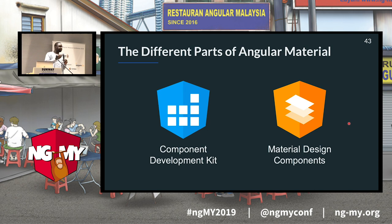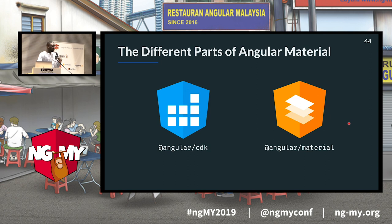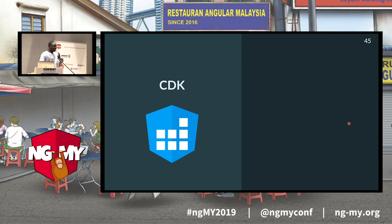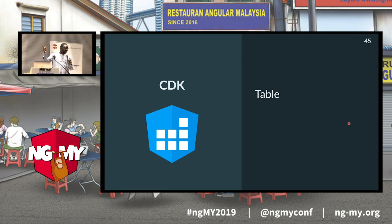There are two parts in Angular Material. The first is the CDK — the Component Dev Kit — and the second is the Material Design Components. To use Angular Material you install two packages: @angular/cdk and @angular/material. The CDK helps you implement common behaviors. It contains unstyled components; for example, the Angular Material data table uses the CDK data table under the hood, and you can use the CDK data table outside of Angular Material if you want.